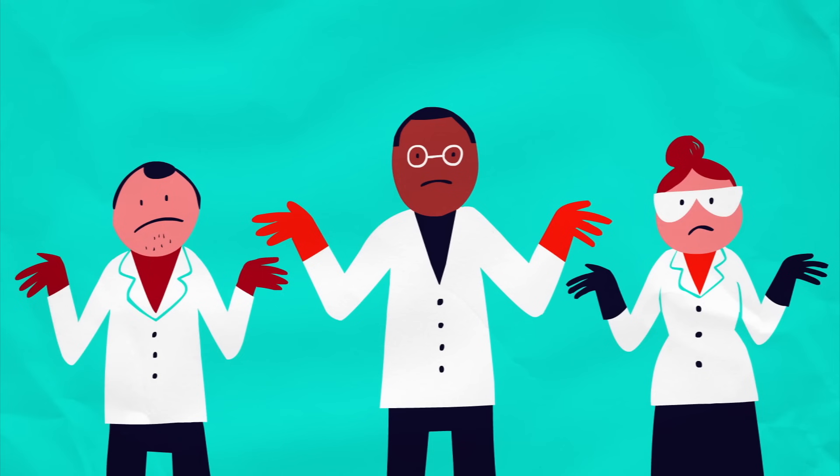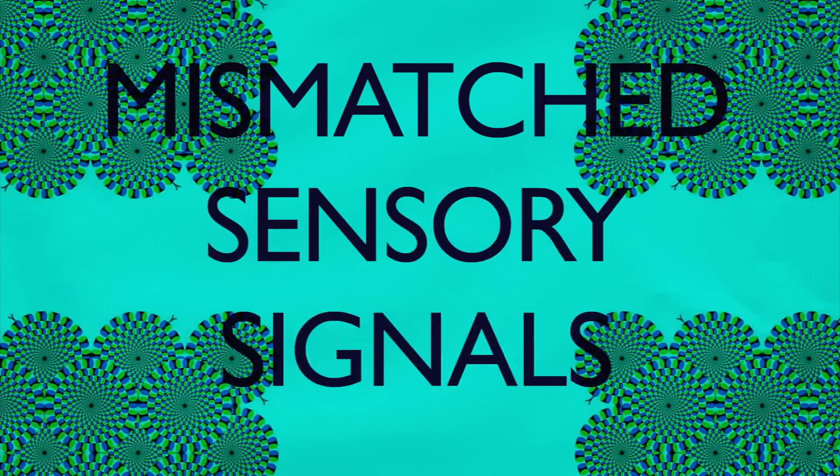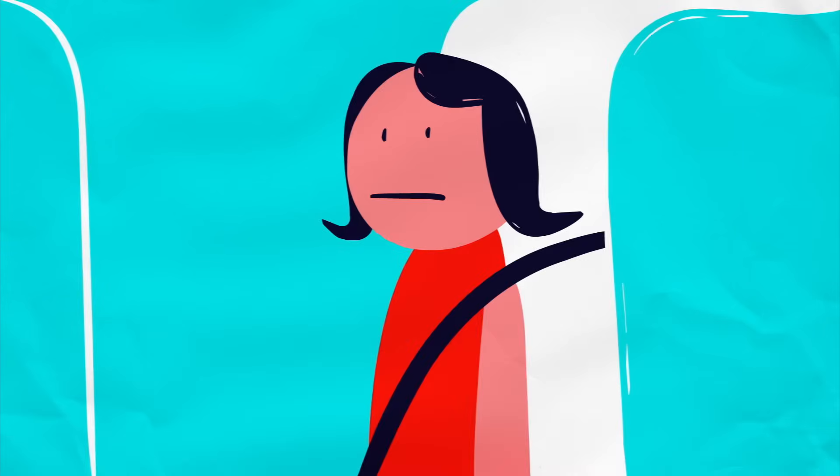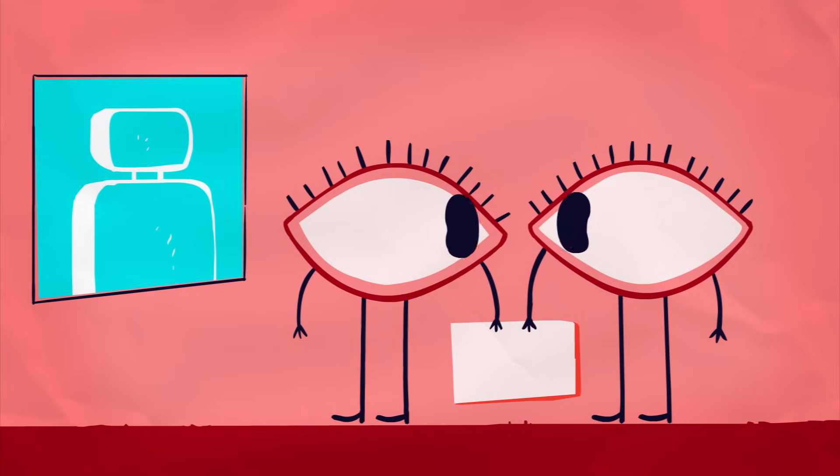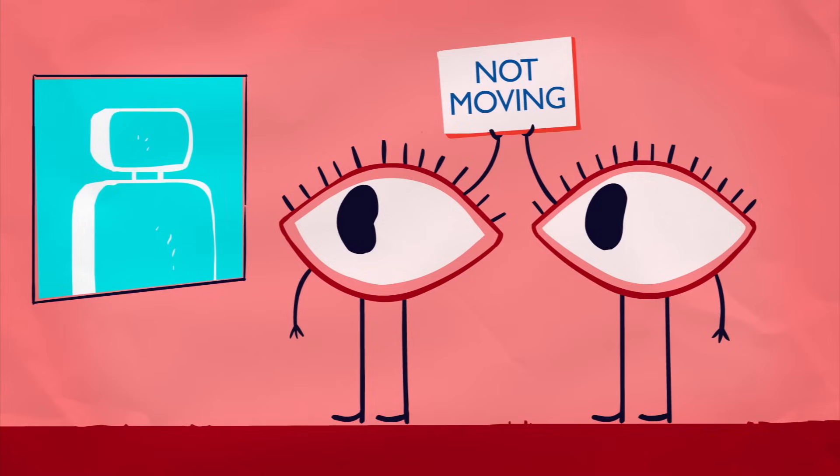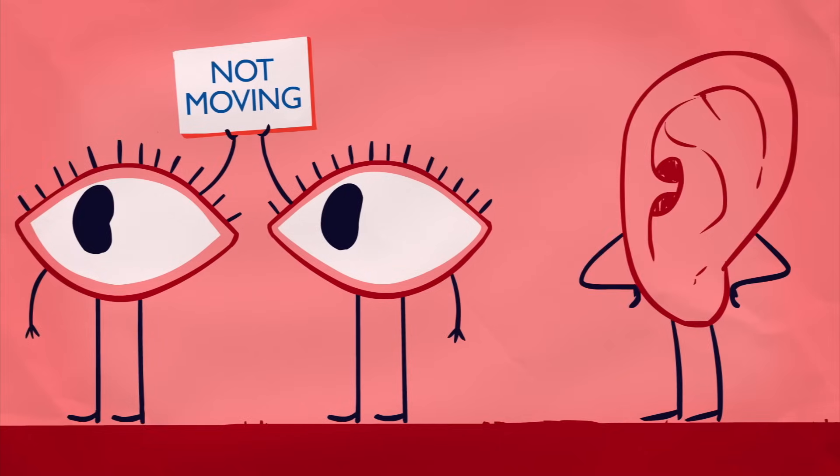Well, believe it or not, scientists aren't exactly sure. The most common theory has to do with mismatched sensory signals. When you travel in a car, your body's getting two very different messages. Your eyes are seeing the inside of the vehicle, which doesn't seem to be moving. Meanwhile, your ear is actually telling your brain that you're accelerating.